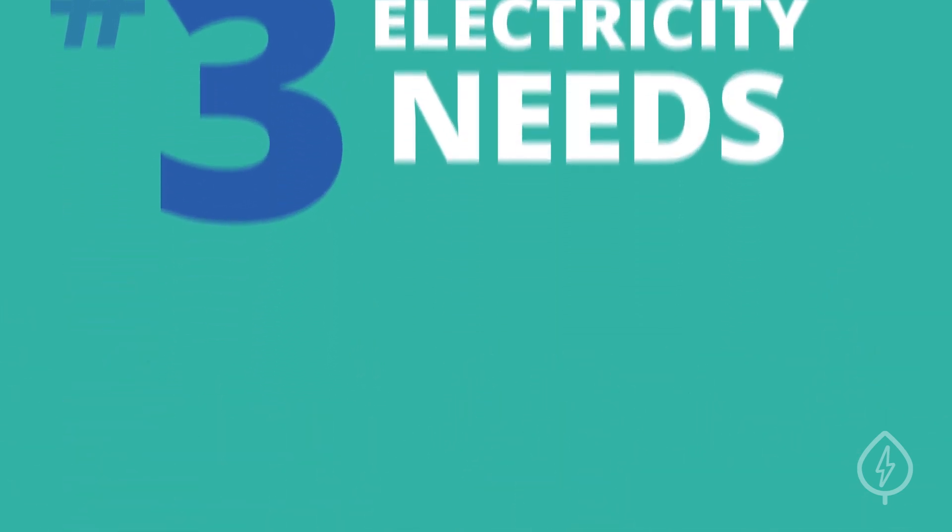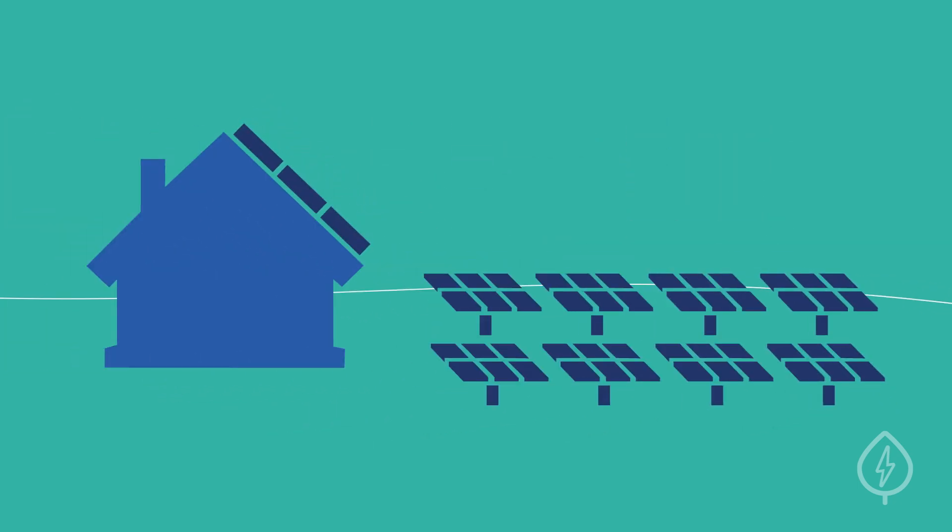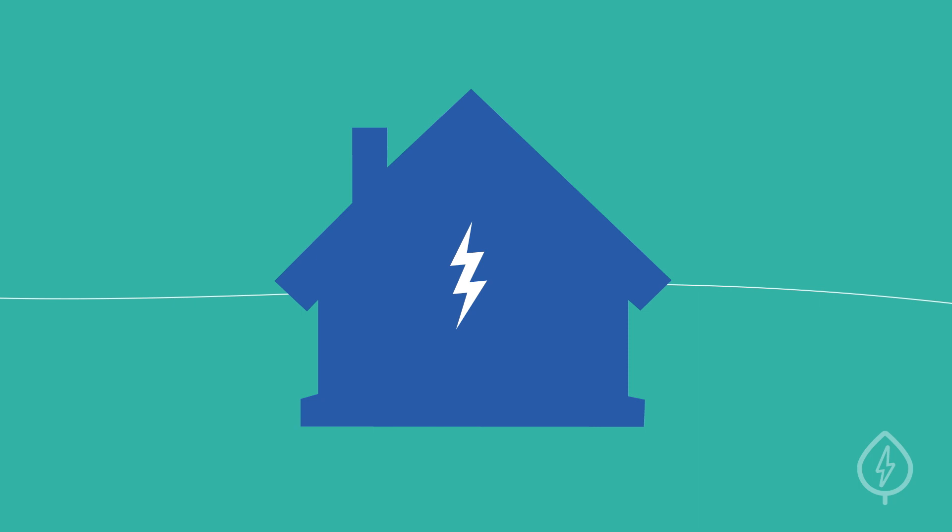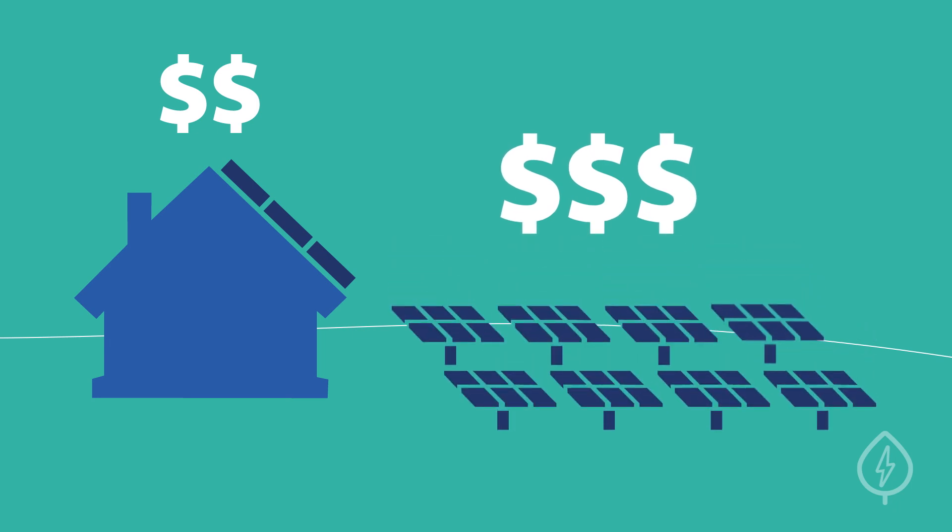Number three, electricity needs. Ground-mounted systems are typically larger than rooftop solar installations. If you have relatively low electricity needs and can get by with a smaller solar panel system on your roof, it may not be worth it to pay more for a large ground-mount system.